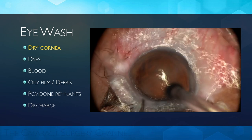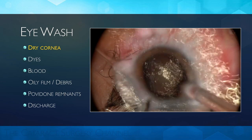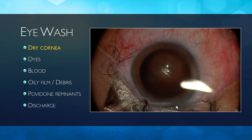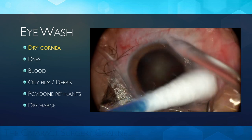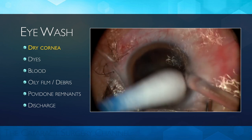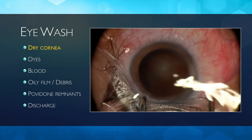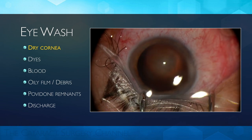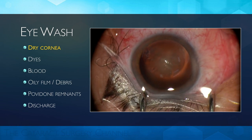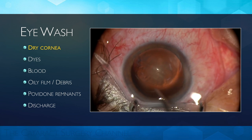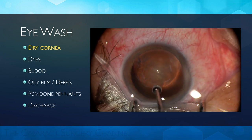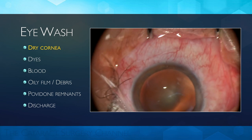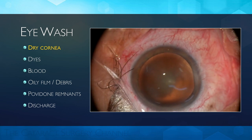Of the situations requiring eye wash, a dry ocular surface is one of the most frequent. A dried corneal epithelium covered with hydrophobic material is a challenge to good visualization. Copious washing, aided by Q-tip mechanical action, is needed. Subsequently coating the eye surface with dispersive OVD resolves the problem.